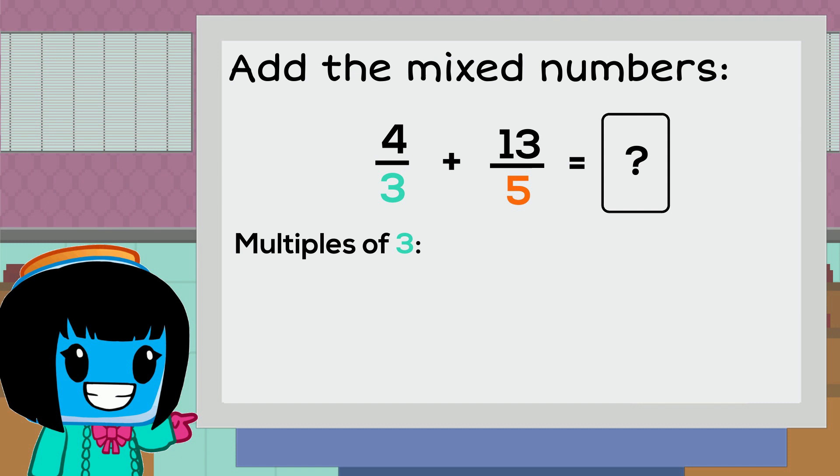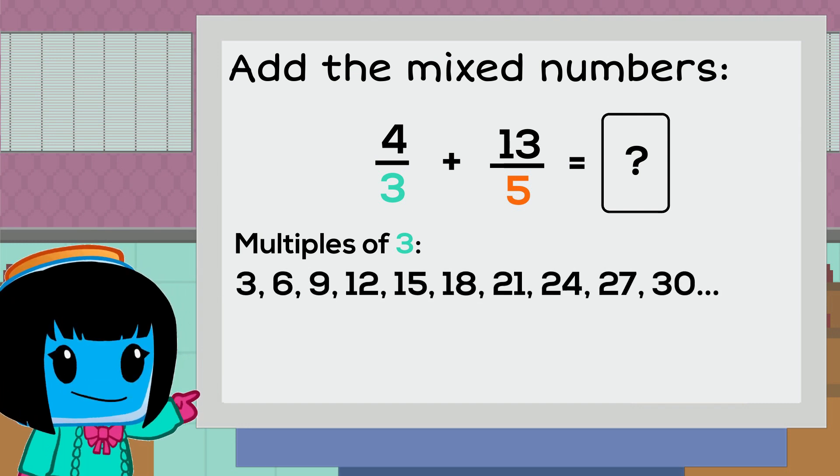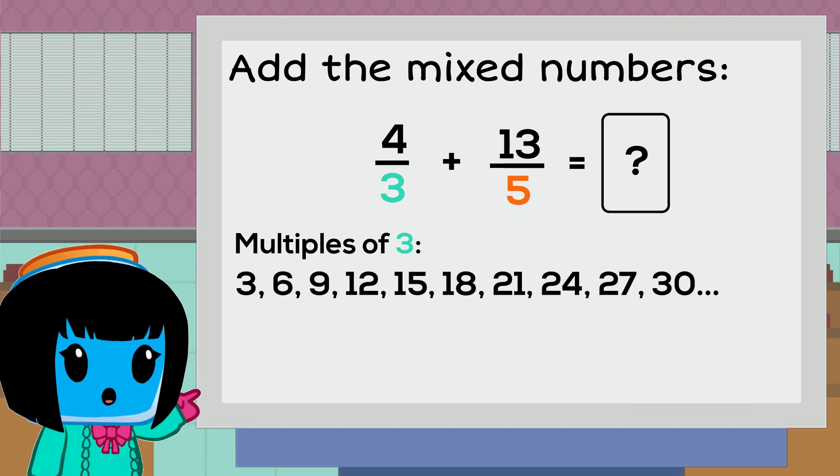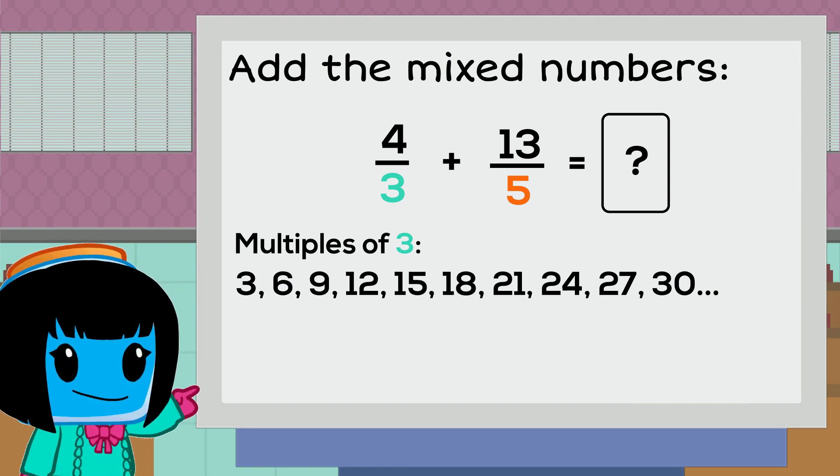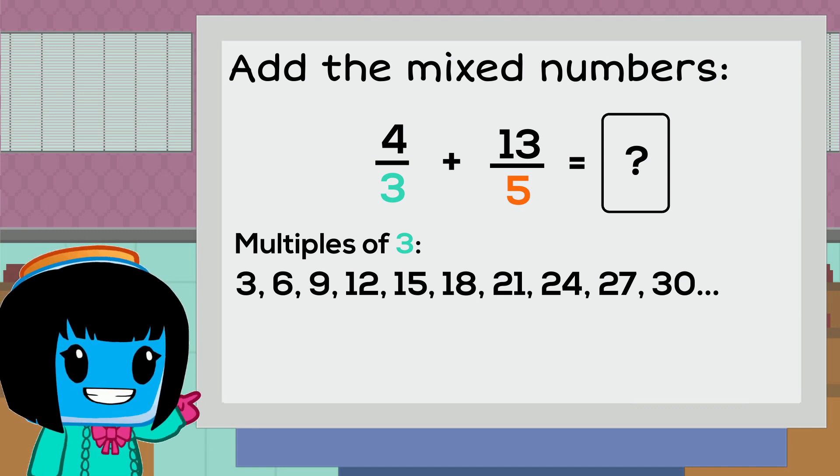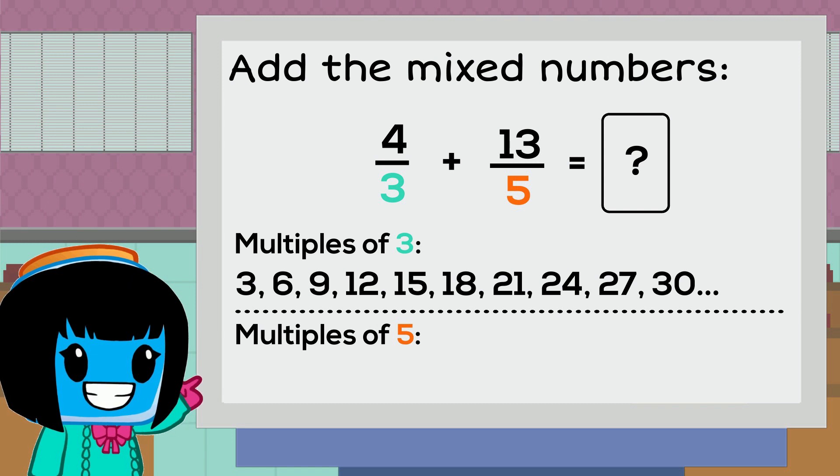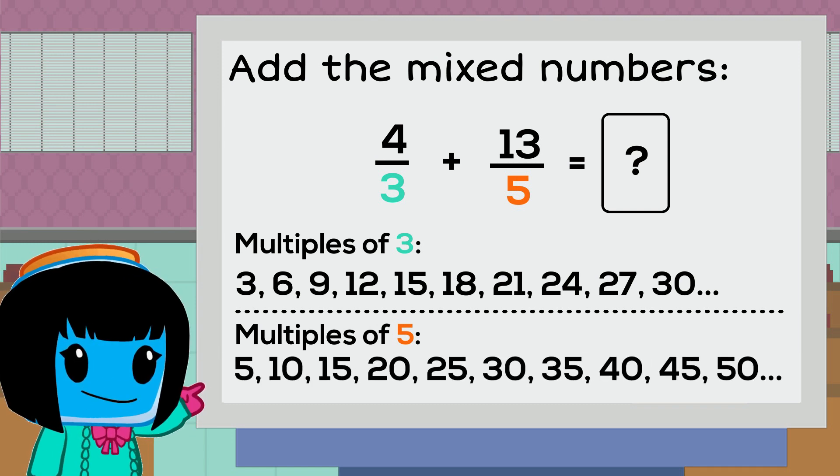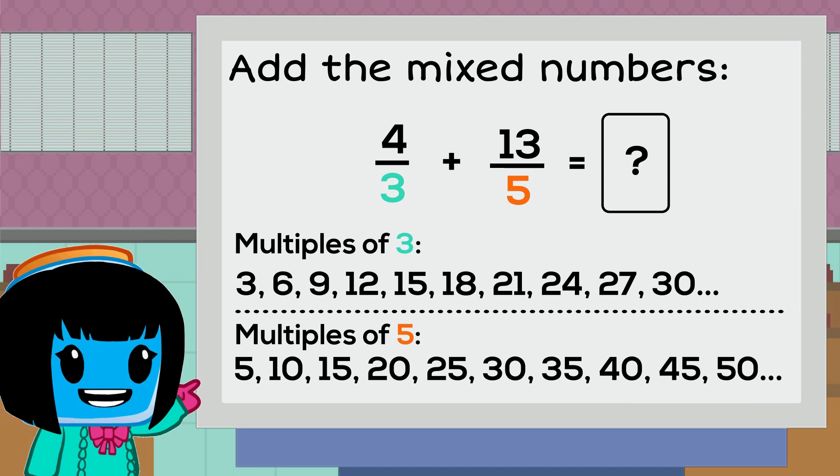The first 10 multiples of 3 are 3, 6, 9, 12, 15, 18, 21, 24, 27, and 30. The first 10 multiples of 5 are 5, 10, 15, 20, 25, 30, 35, 40, 45, and 50.